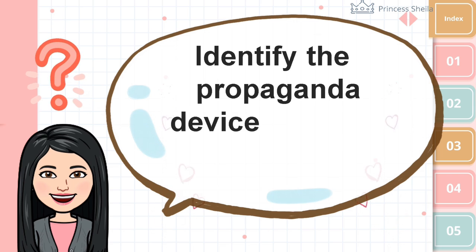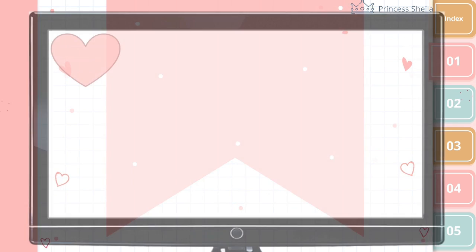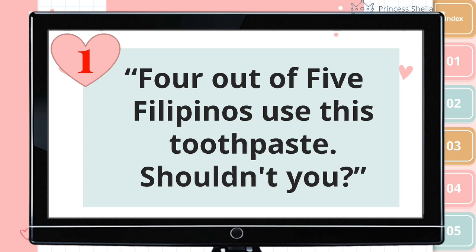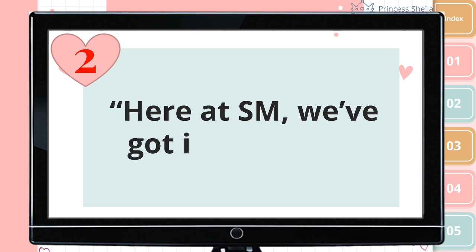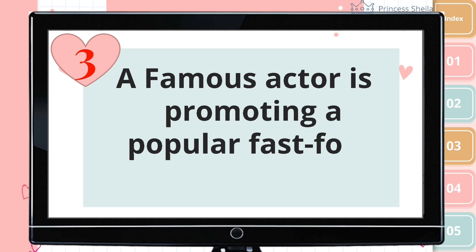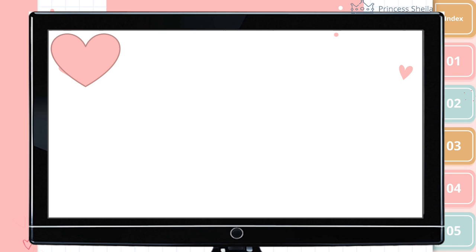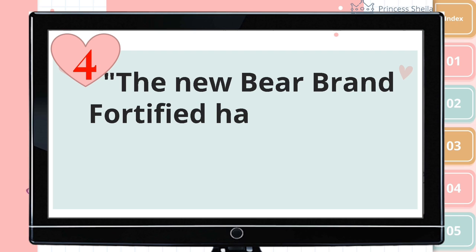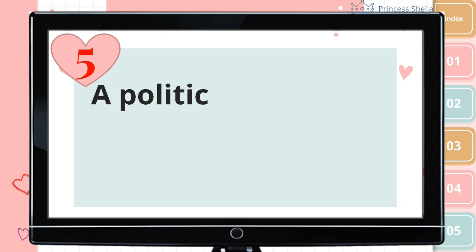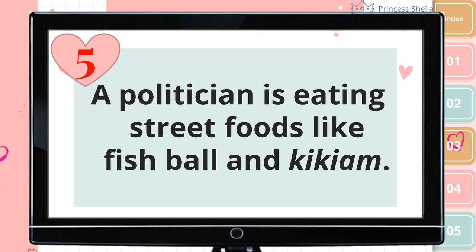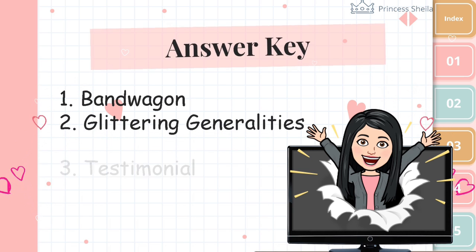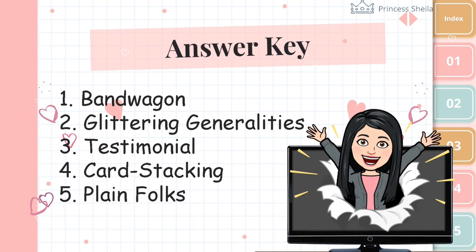Now let's have a short quiz. Identify the propaganda devices used in the following examples. Number 1, Number 2, Number 3, Number 4, Number 5. Here are the answers: Number 1 is bandwagon, Number 2 is glittering generalities, Number 3 is testimonial, Number 4 is card stacking, and Number 5 is plain folks.